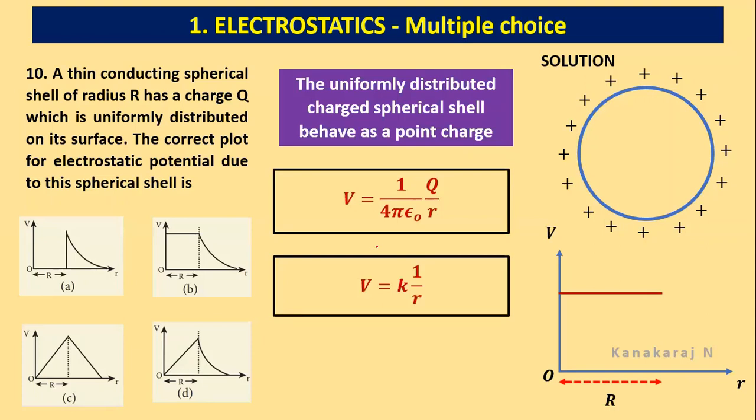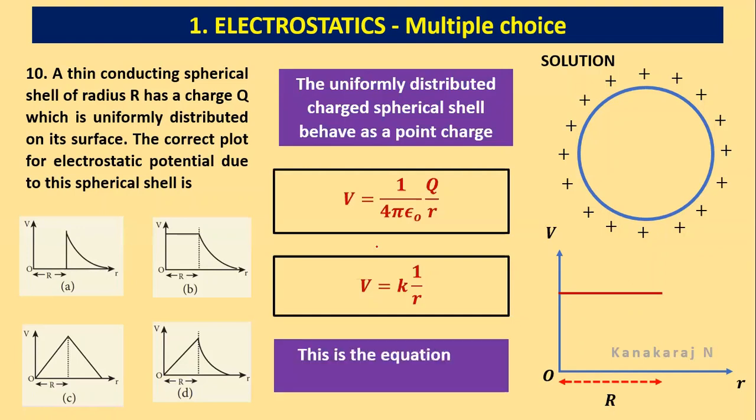Because in this problem, 1 by 4 pi epsilon_0 and Q remains constant. So V equals k times 1 by r. This is the equation of a hyperbola. So we look at the graph, we get a hyperbola in our graph. So out of these four, the option B is the right plot for electrostatic potential due to this spherical shell.